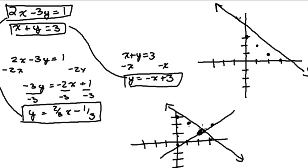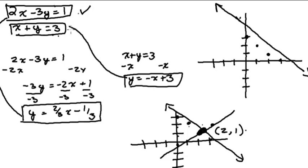It looks like the two lines intersect at the point (2, 1), which is our estimate for the solution to this system. We can verify by plugging in — if x is 2 and y is 1, the first equation gives 4 minus 3 equals 1, which works. The second gives 2 plus 1 equals 3, which also works. So (2, 1) is indeed the solution. That was solving a system of equations graphically.